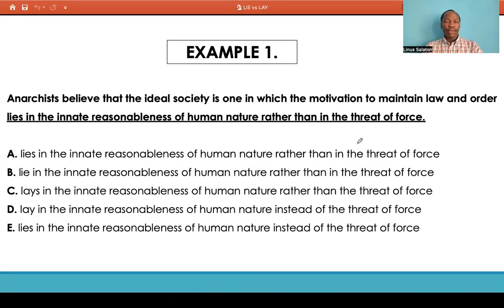So, the example says anarchists believe that the ideal society is one in which motivation to maintain law and order lies in the innate reasonableness of human nature other than in the threat of force. This is an example of lie taking the indirect object. Remember every time lies takes indirect object, and so for this case we are looking out for singularity of lie whether it's singular or plural. And again, we can tell this uses a conjunction here, so anytime you spot a conjunction make sure that parallelism is observed in the sentence.